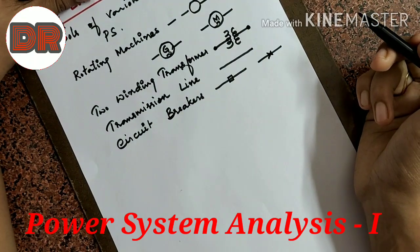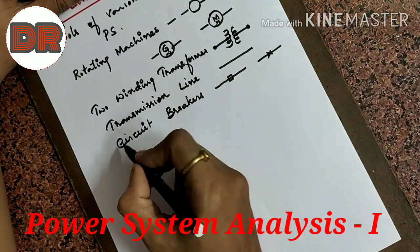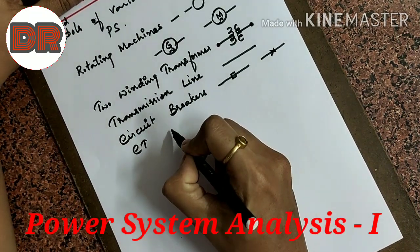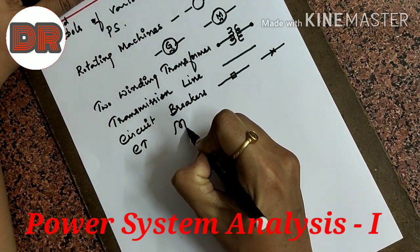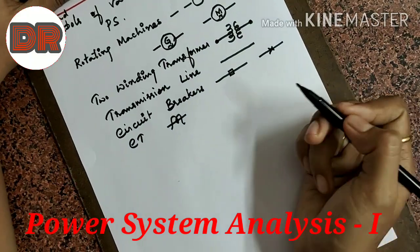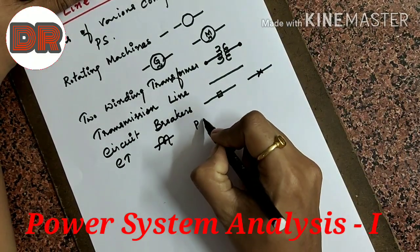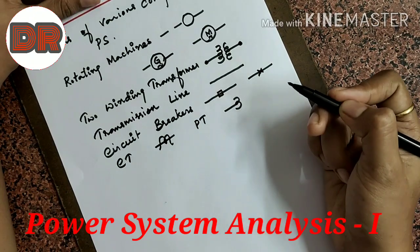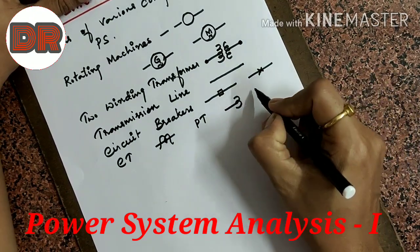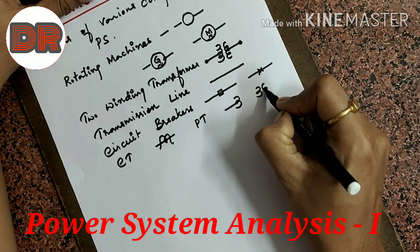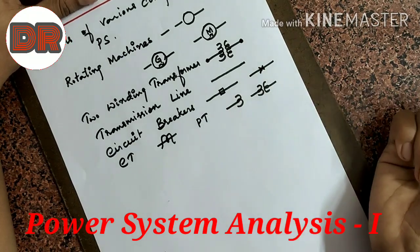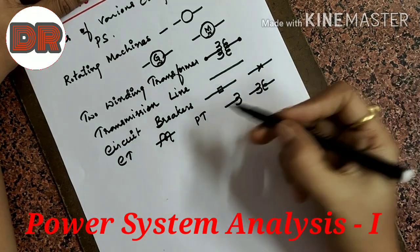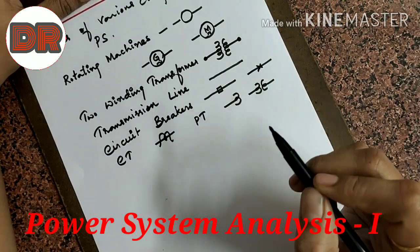Next is current transformer. For current transformer (CT), we use this symbol. For PT, that is potential transformer, you can use this symbol or an alternative symbol. This is for current transformer and this is for potential transformer.